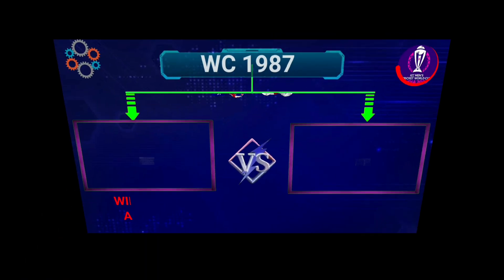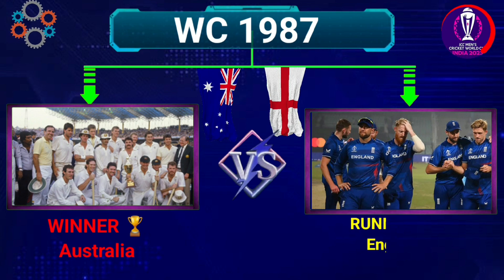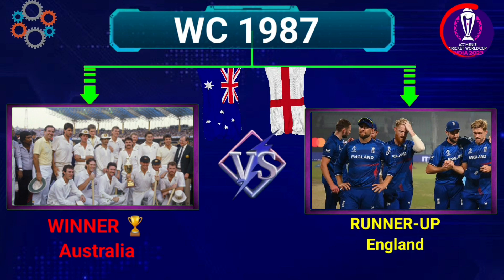Number 4: World Cup 1987, Winner Australia, Runners-up England.